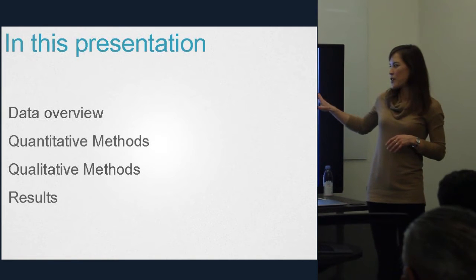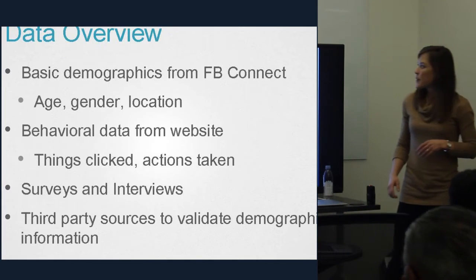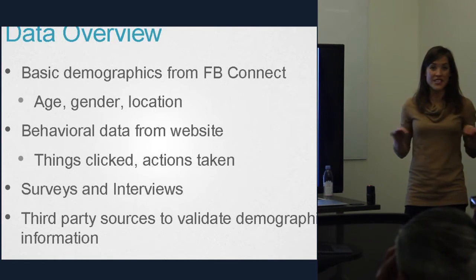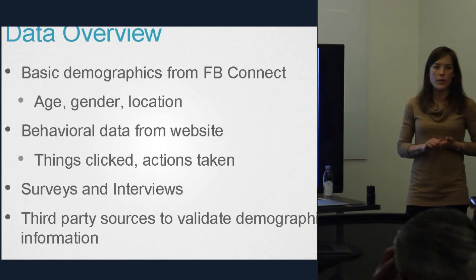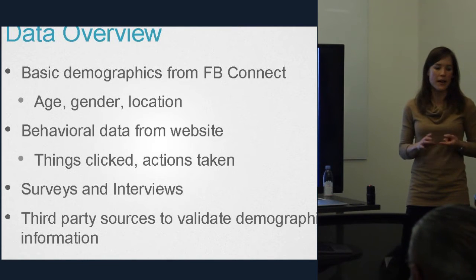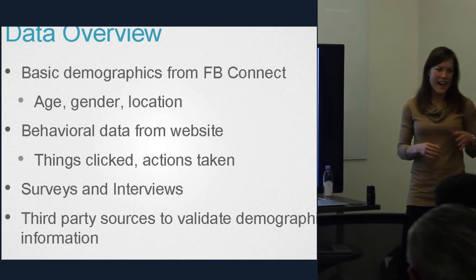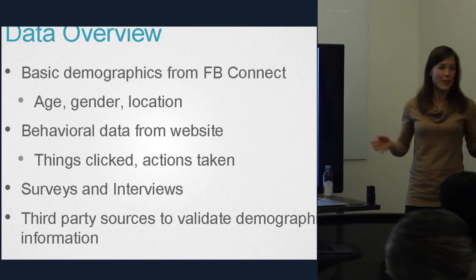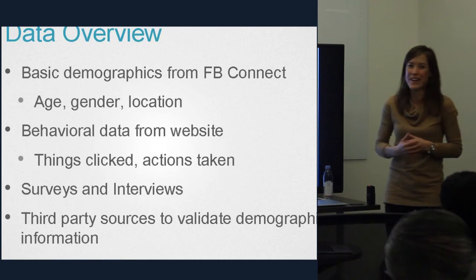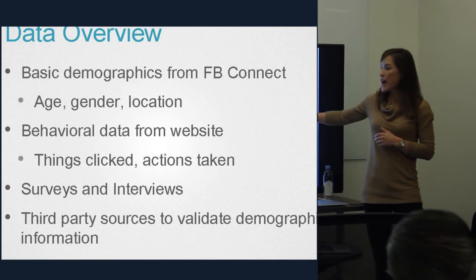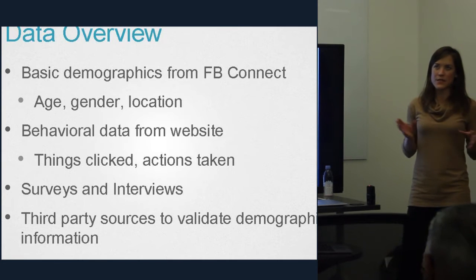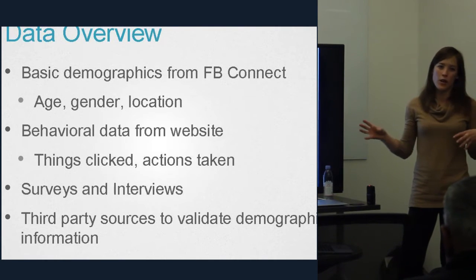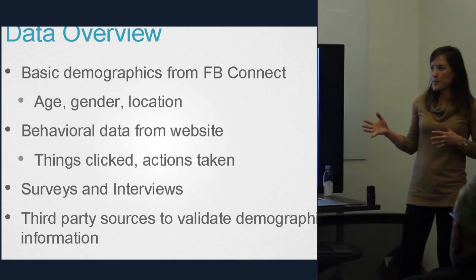First, a data overview, then the methods we used and our results. At Causes, we had a lot of variation in our data because we used Facebook Connect. When people joined Causes, they did it through Facebook, and that gave us a ton of information on gender, location, age, and how many friends they have. I'm not sure if Facebook Connect still works that way because this was a couple of years ago, but for a while we could just download tons of data from Facebook. We also had our behavioral data from our own website — since it was an activist platform, we knew who the most active people were and what kinds of topics they were interested in, whether it was animal rights, human rights, or environmental justice.